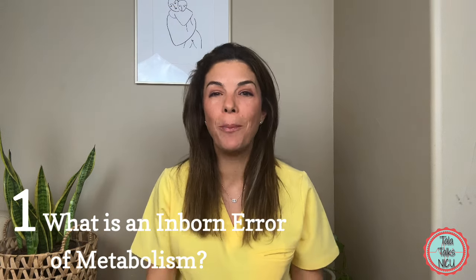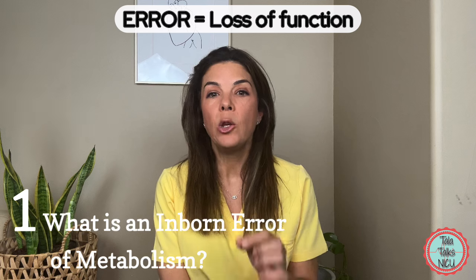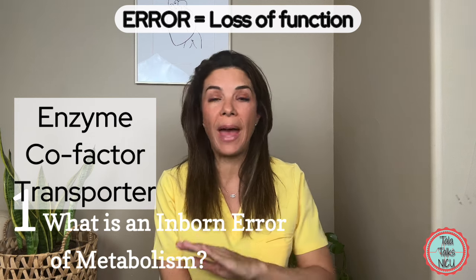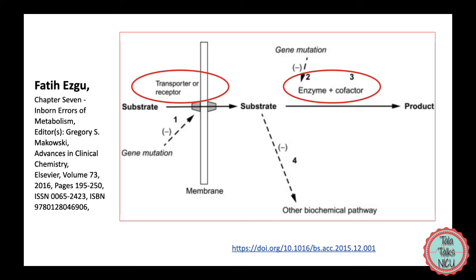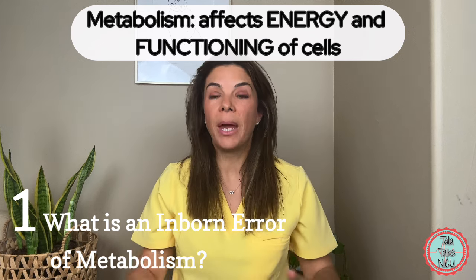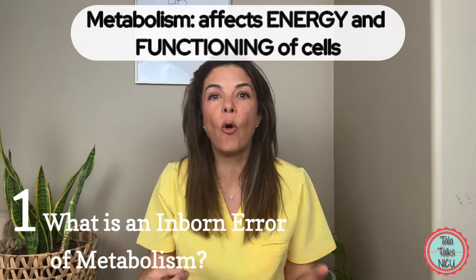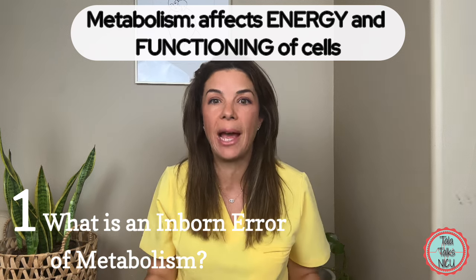An error means that something isn't functioning properly. Normally this is because there is an enzyme in one of the metabolic pathways that isn't functioning properly or that enzyme is lacking altogether. It could also be the failure of functioning of a coenzyme or a cofactor which helps that enzyme work, or it could be because the transporter — which takes different substrates from one side of a cell to the other, or from outside or inside an organelle — is also not functioning. And metabolism refers to how the cell gets its energy and performs all the functions it needs for the body to survive.